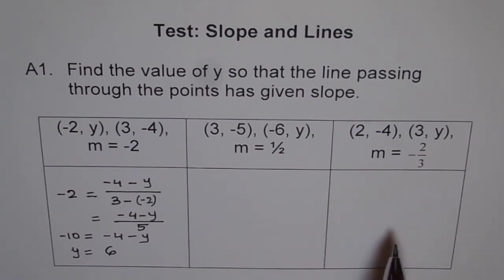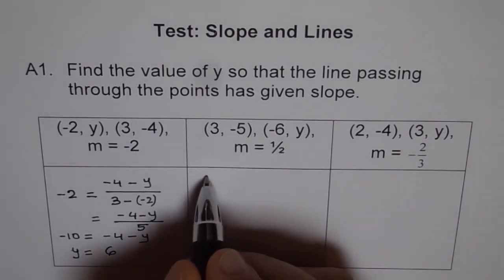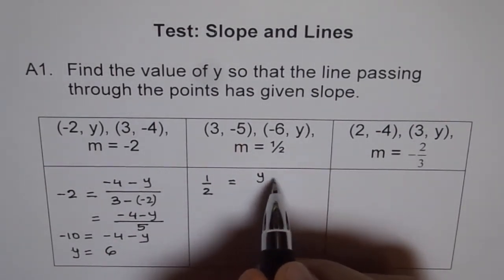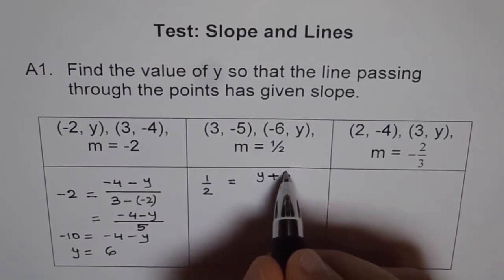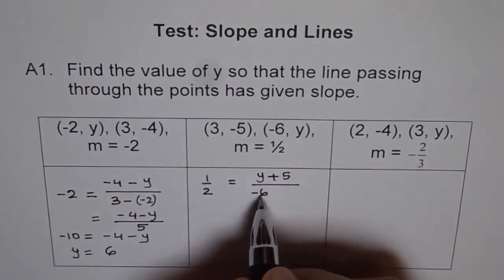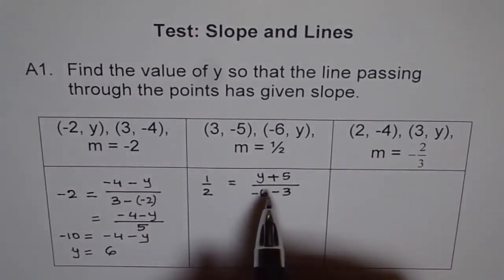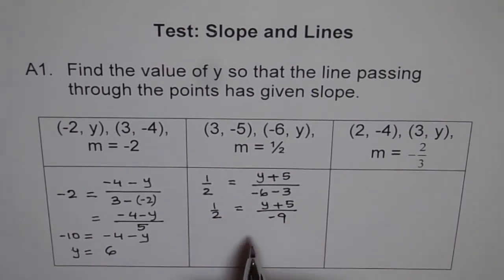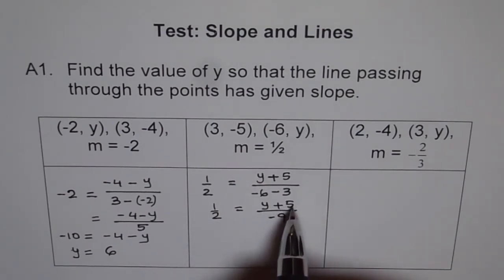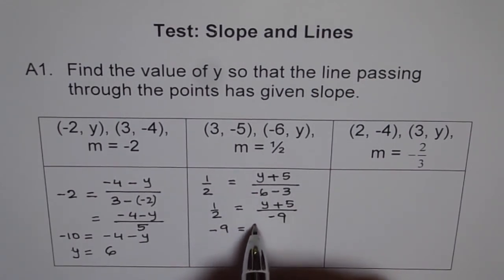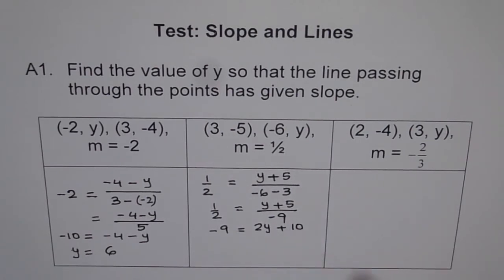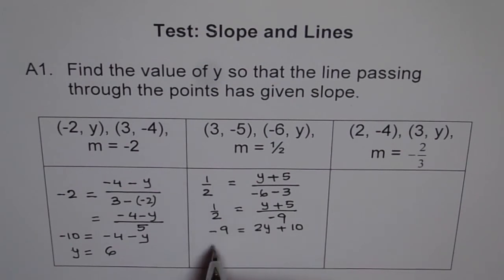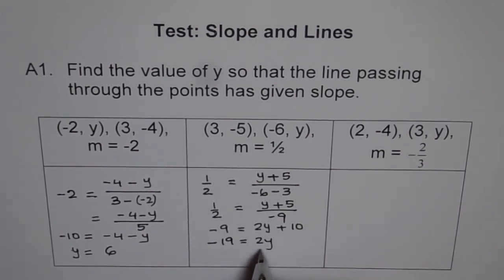So you understand now how to do it. Slope here is half. We write half as slope. Y2 minus Y1, that means Y minus minus 5, becomes plus, divided by X2 minus X1, which is minus 6 minus 3. Then we need to cross multiply. First let's simplify: Y plus 5 divided by minus 9 equals to half. So we multiply 2 by Y plus 5 and minus 9 by 1. We get minus 9 equals to 2Y plus 10. To solve for Y, subtract 10 from both sides, giving minus 19 equals to 2Y, and Y equals to minus 19 divided by 2.